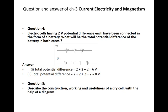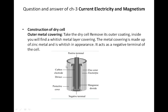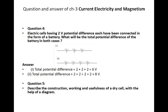So the first question is: electric cells having 2 volt potential difference each have been connected in the form of a battery. What will be the total potential difference of the battery in both cases? You can see all the batteries are connected in series, not in a parallel way. So the total potential difference — you simply add the value of all the batteries. As given, each battery is 2 volts, so you add them all and get the final value: 6 volts and 8 volts, because here 3 batteries are connected and there 4 batteries are connected.